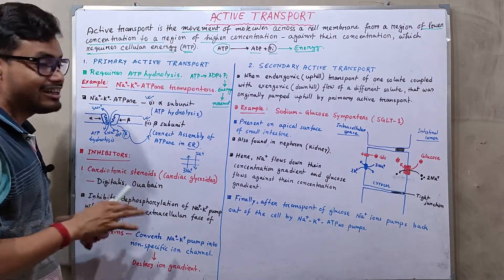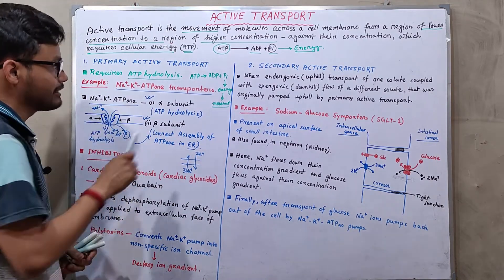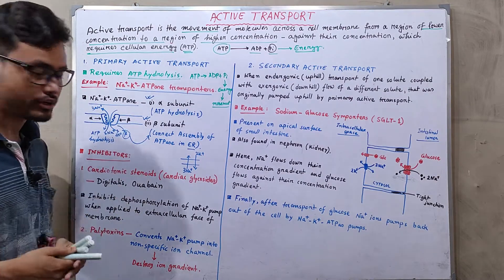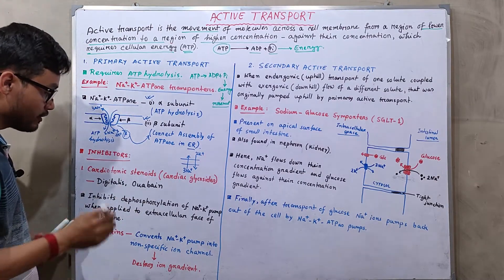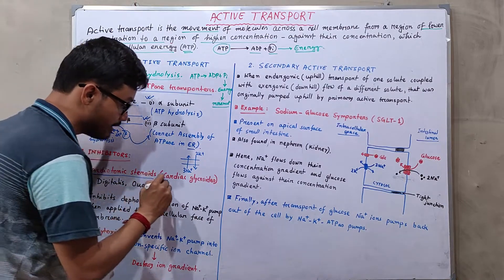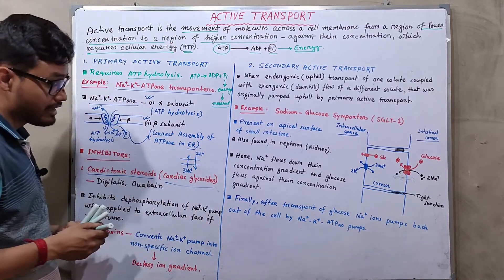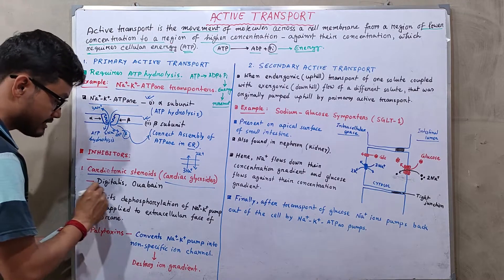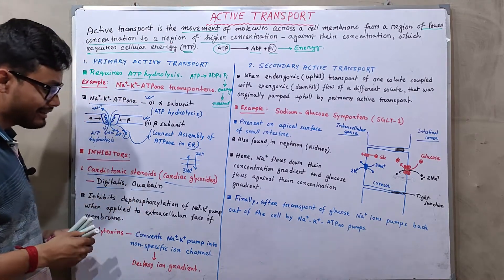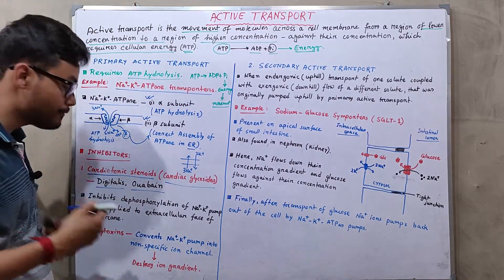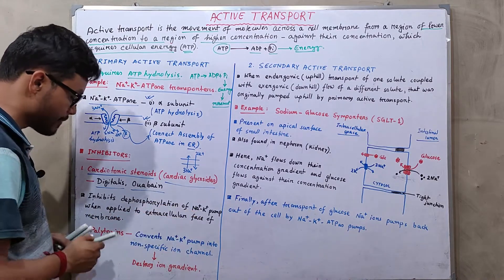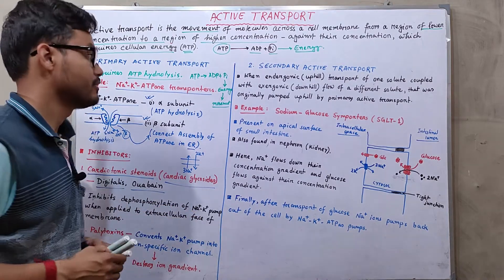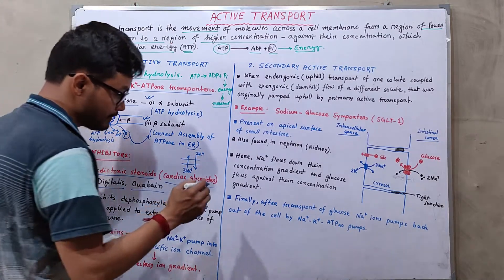There are certain inhibitors of these primary active transporters, or sodium-potassium ATPase transporters. They are known as cardiotonic steroids or cardiac glycosides. Examples of these cardiac glycosides are digitalis and ouabain.